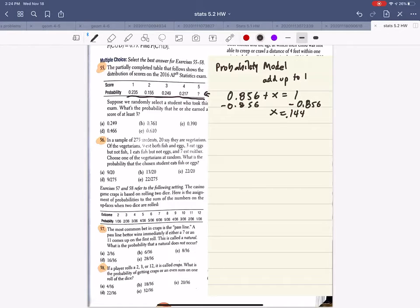Now I can fill this in here, right? And we can now finish the question. So the question states, suppose we randomly select a student who took this exam. What is the probability that he or she earned a score of at least a 3? So this is at least a 3, this is at least a 3, and this is at least a 3. So that's what I'm going to go with.